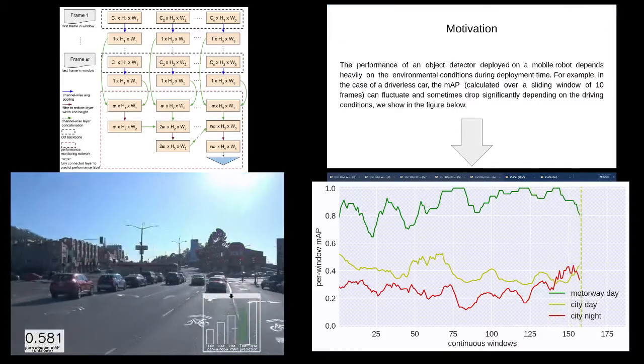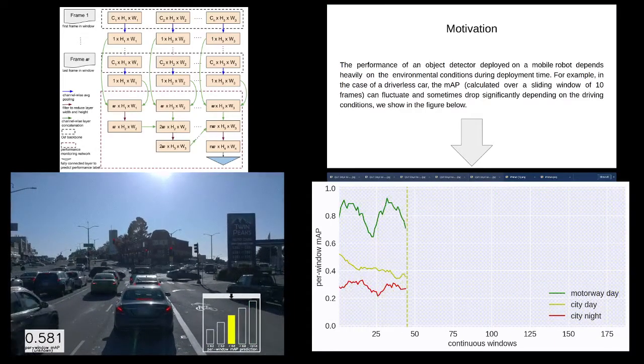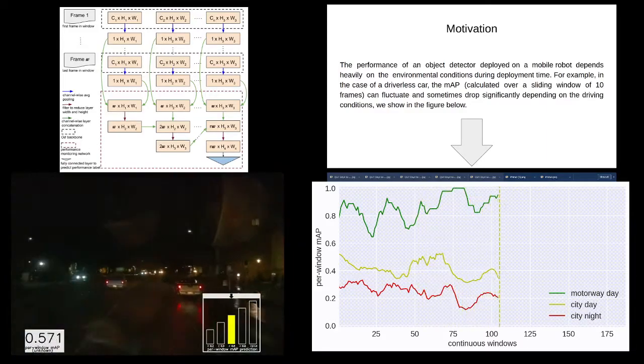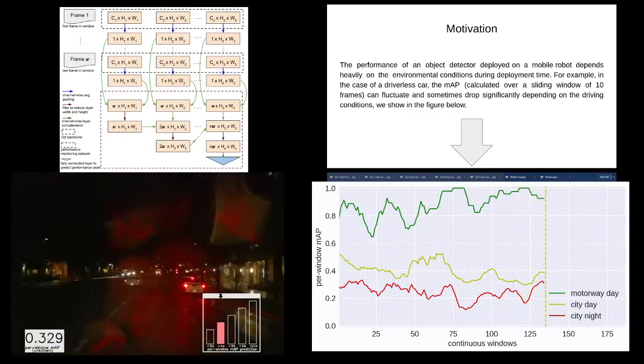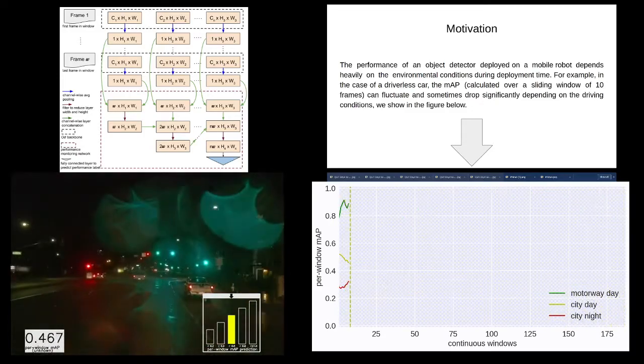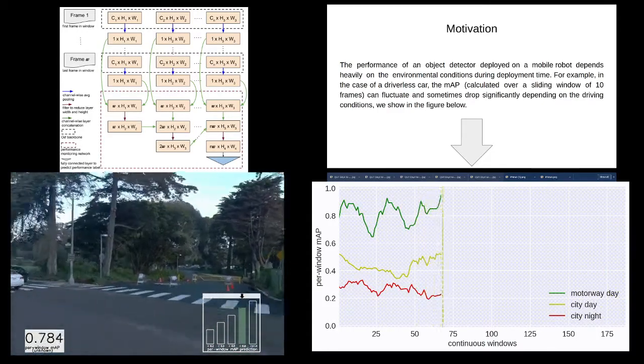First, we will explain the motivation behind this work. The performance of an object detector deployed on a mobile robot depends heavily on the environmental conditions during deployment time. For example, in the case of a driverless car, the mean average precision MAP calculated over a sliding window of 10 frames can fluctuate and sometimes drop significantly depending on the driving conditions.